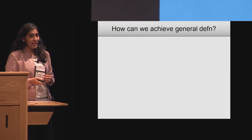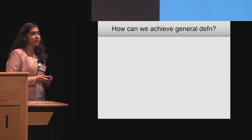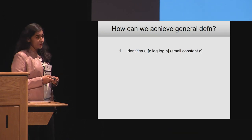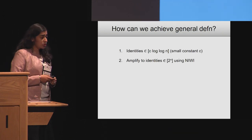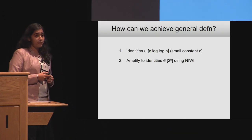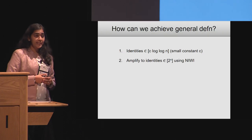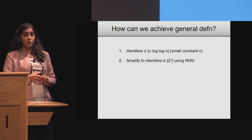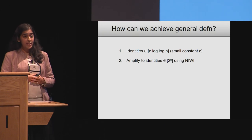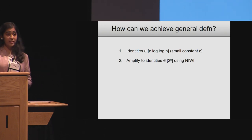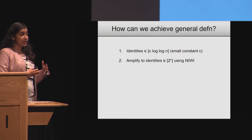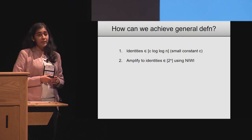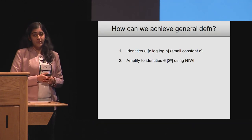Towards that, we first have a construction for identities in c log log n for a small constant c. And then we have an amplification step that helps us amplify the space of identities exponentially many times, to go all the way to identities in 2^n.